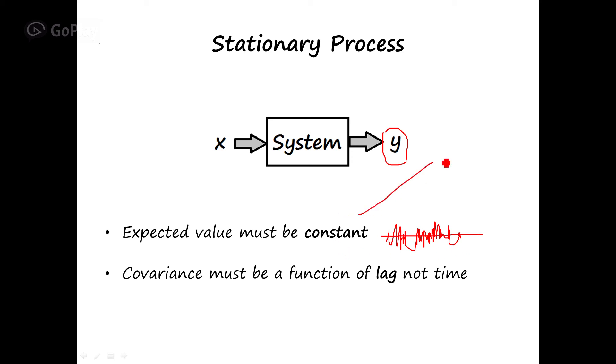But for example, if you have trend, this is not a stationary signal because it goes up. Or if you have something like this, this is not a stationary signal because it goes down.